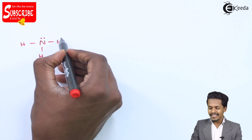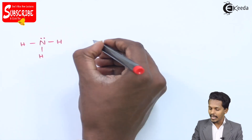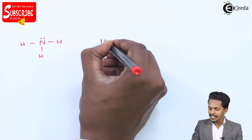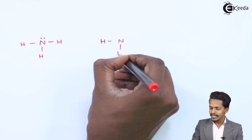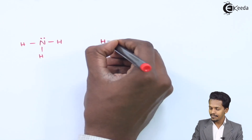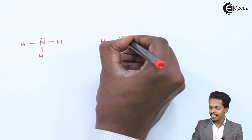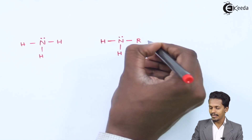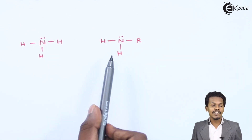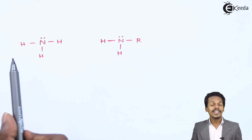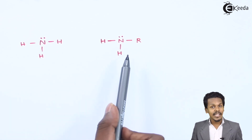For example, suppose I replace this hydrogen atom with an alkyl group. I would write it as H–N–H with an alkyl group R attached. So this is the product known as an amine. If you talk about this: this is ammonia, and this is the amine.